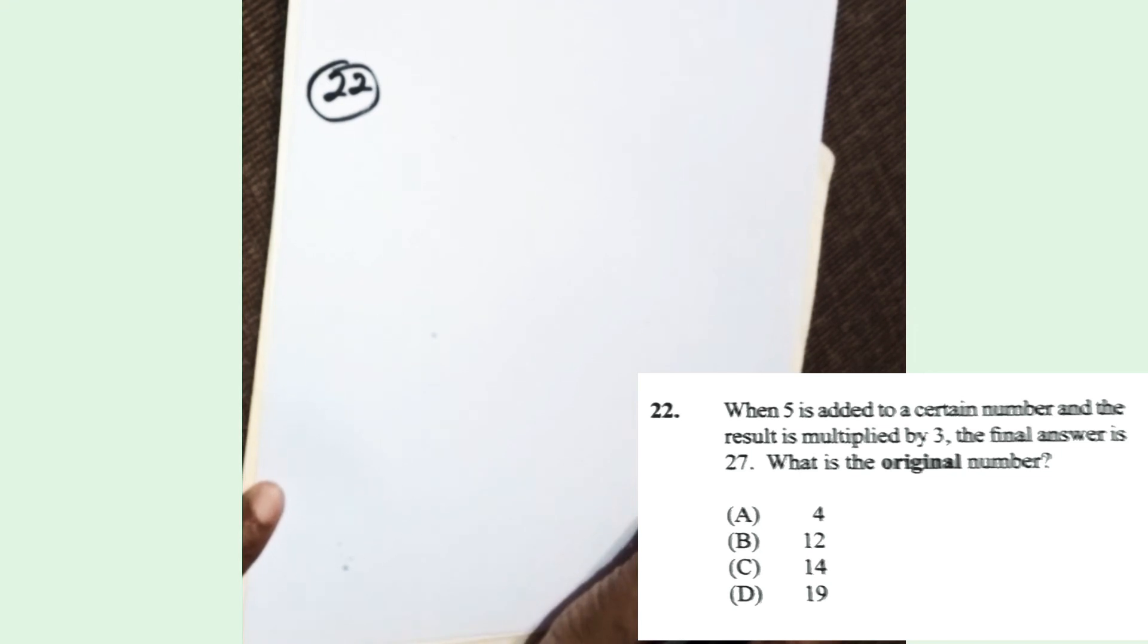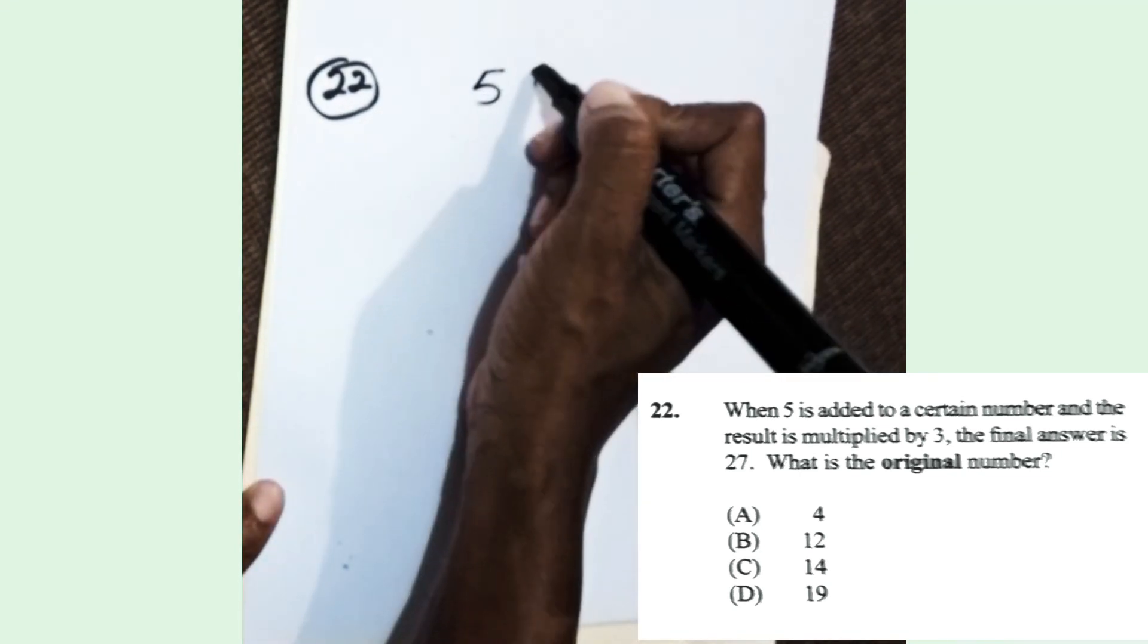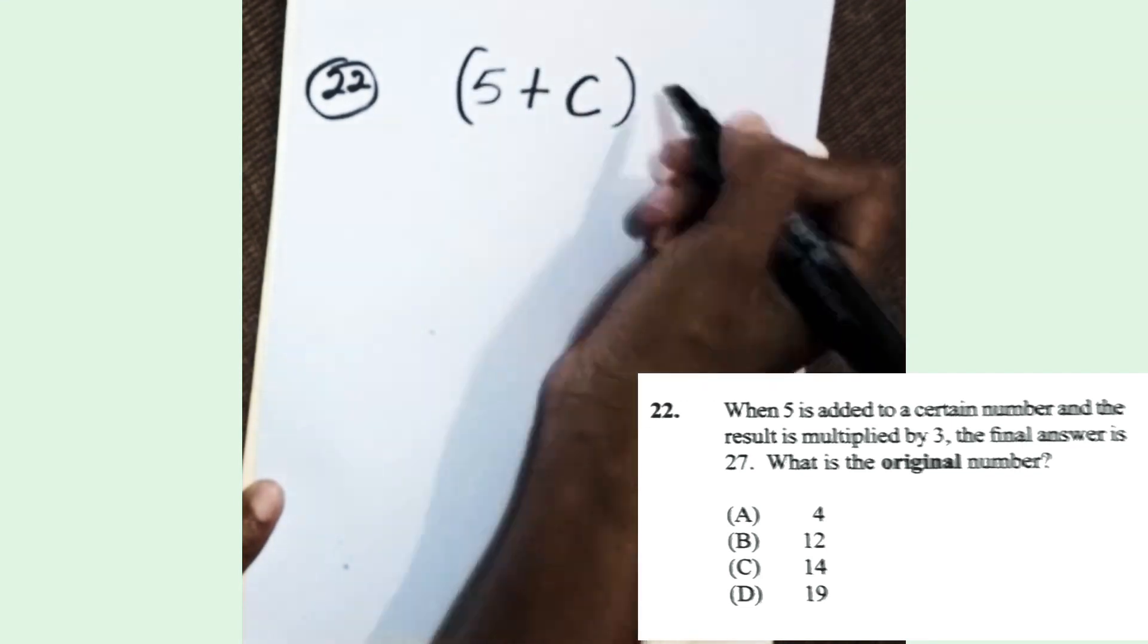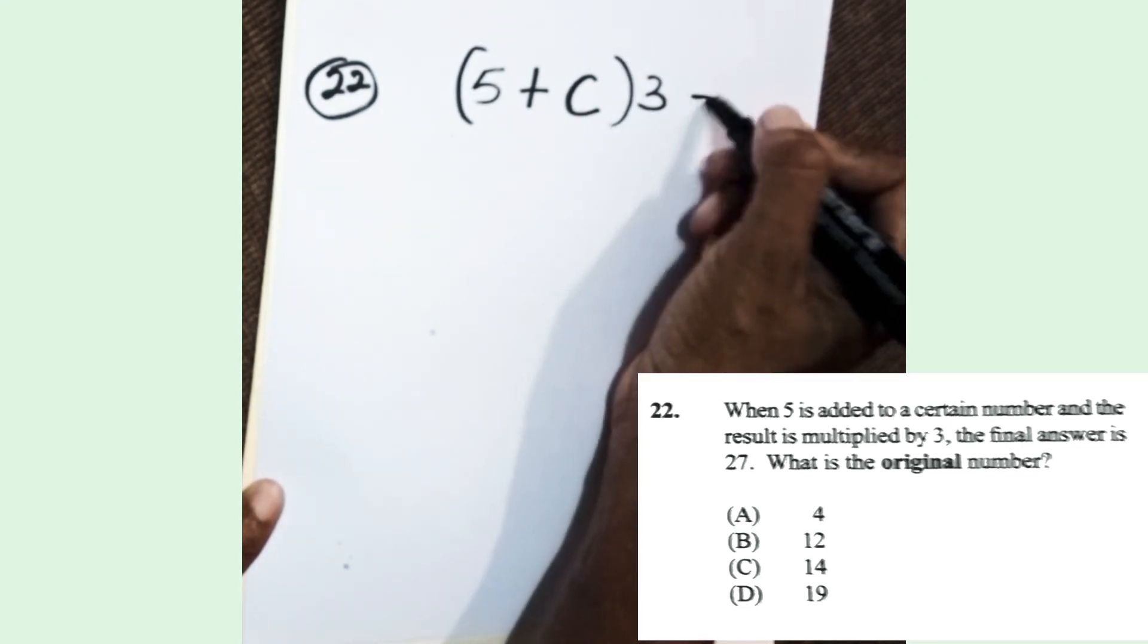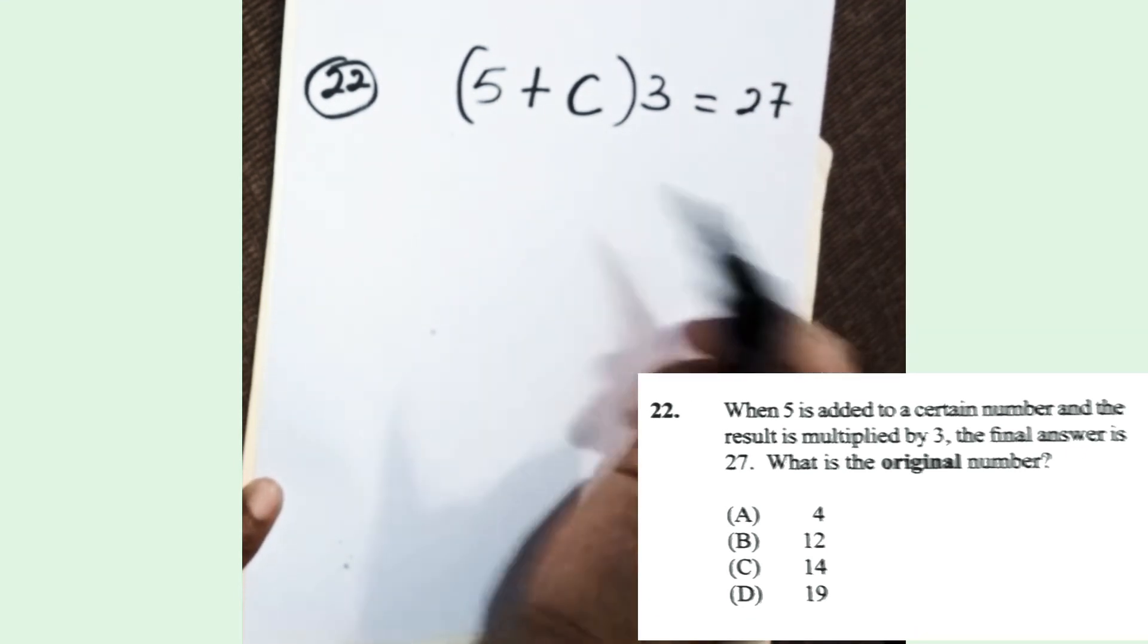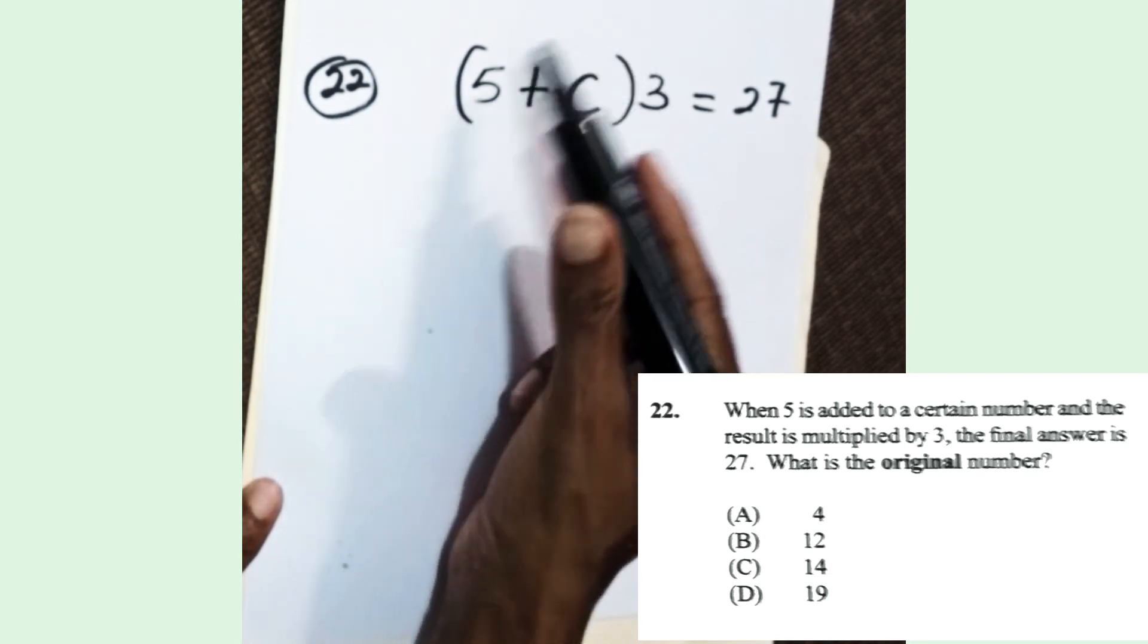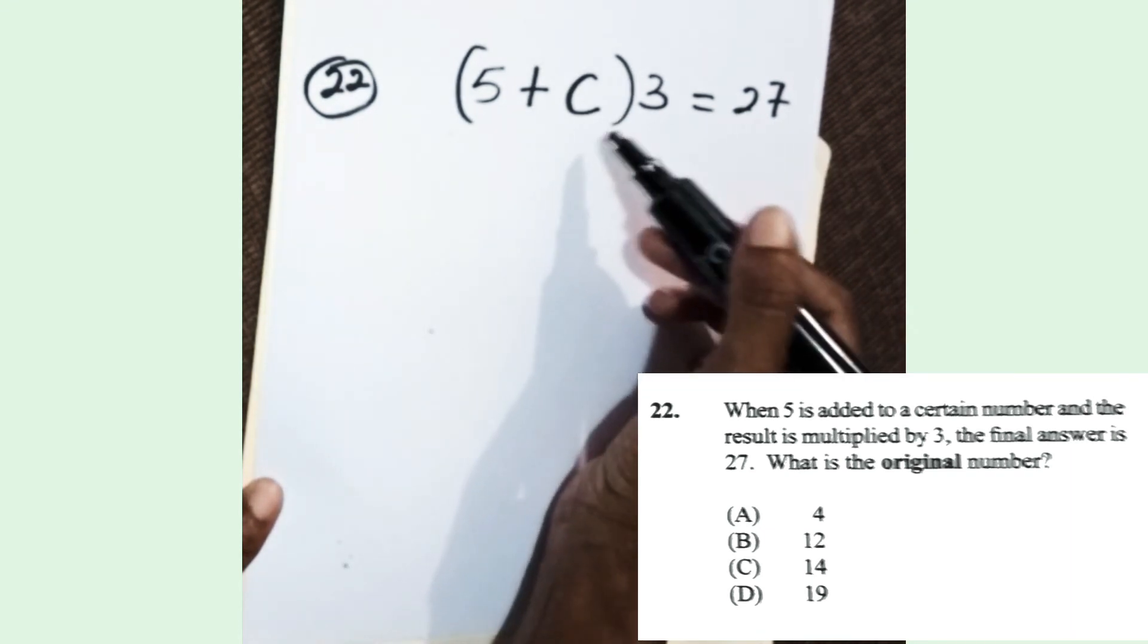Now let us look at question 22. When 5 is added to a certain number—let's call that number C—and the result is multiplied by 3, so the result that you get will be 5 plus C. We multiply that by 3; the final result is 27. Now what is the original number?